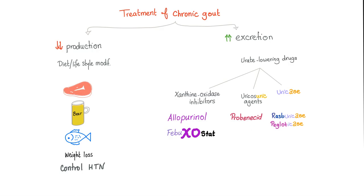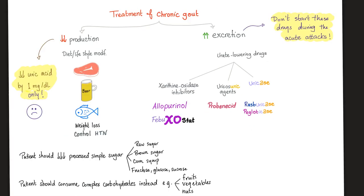For treatment of chronic gout, you either decrease production or increase excretion. Regarding dietary changes: decreasing uric acid through diet will at best reduce uric acid by about 1 mg per deciliter, which is not sufficient on its own. Adherence with dietary restriction regimens is easier said than done.